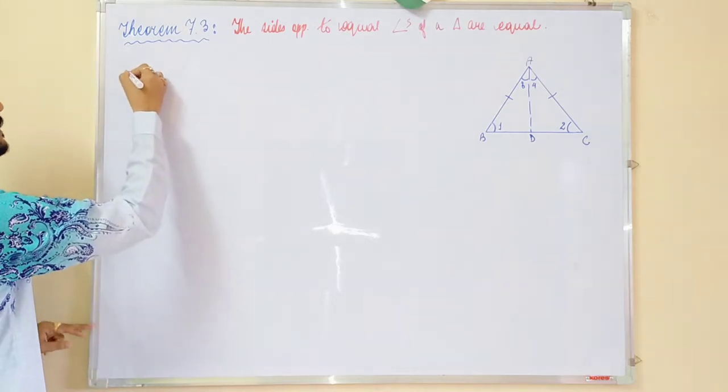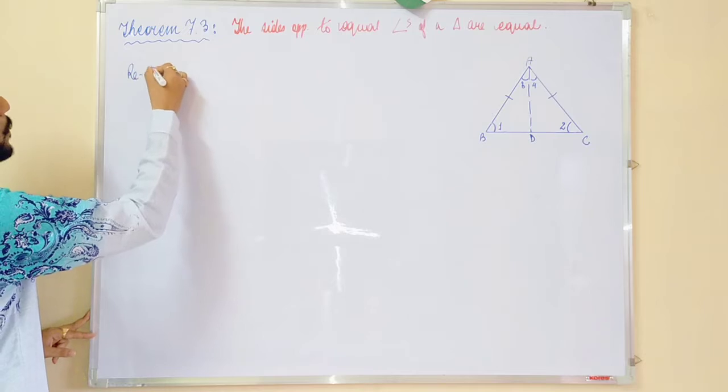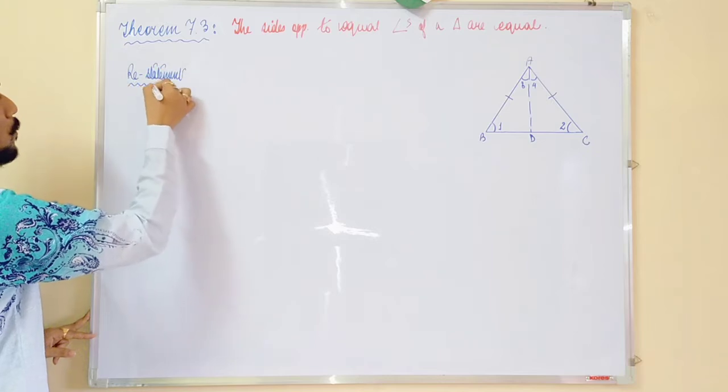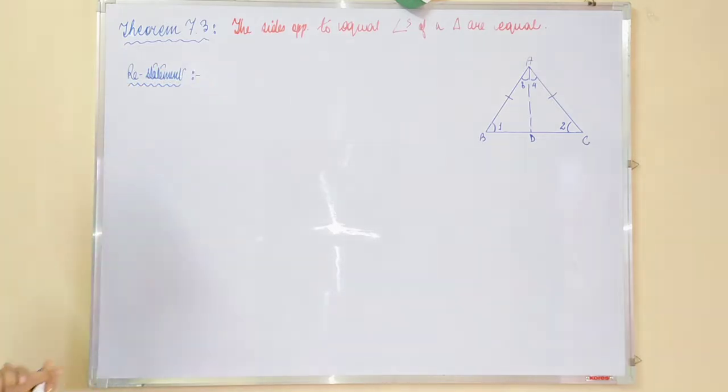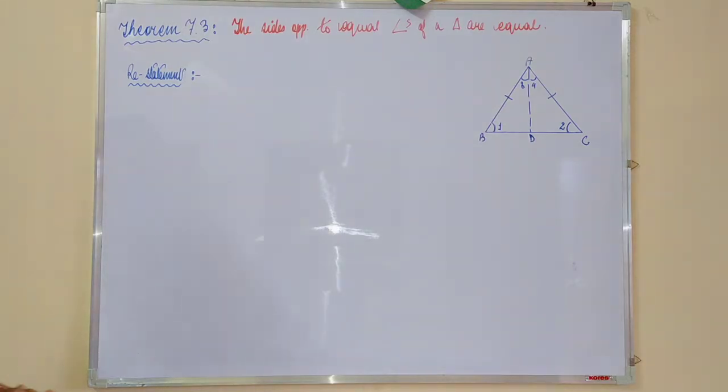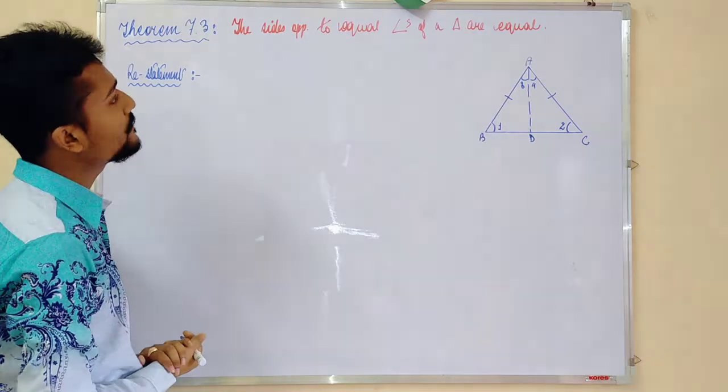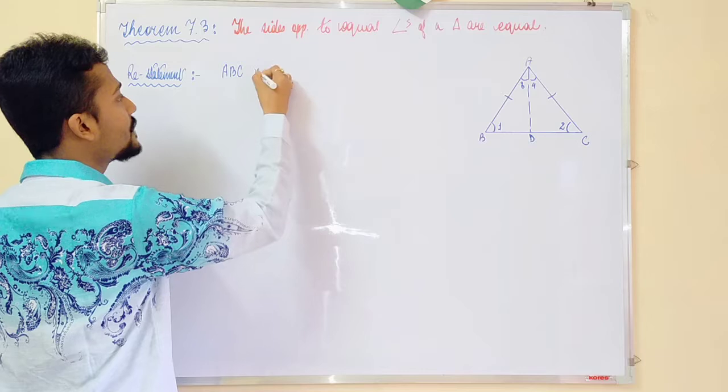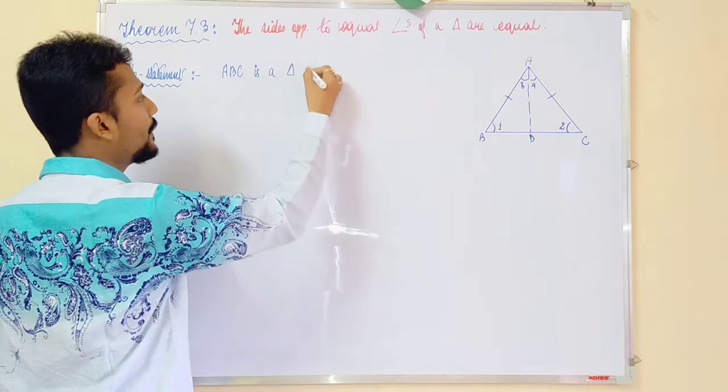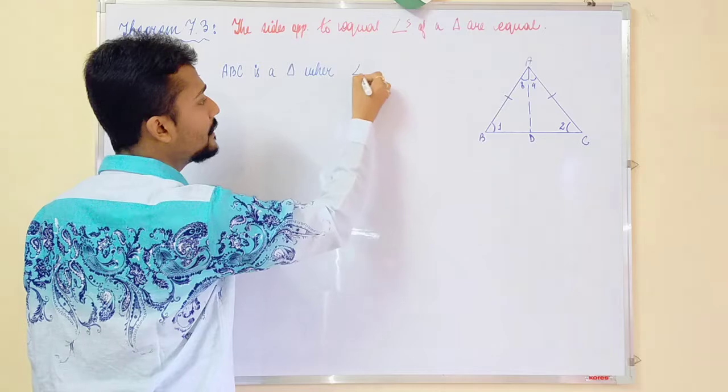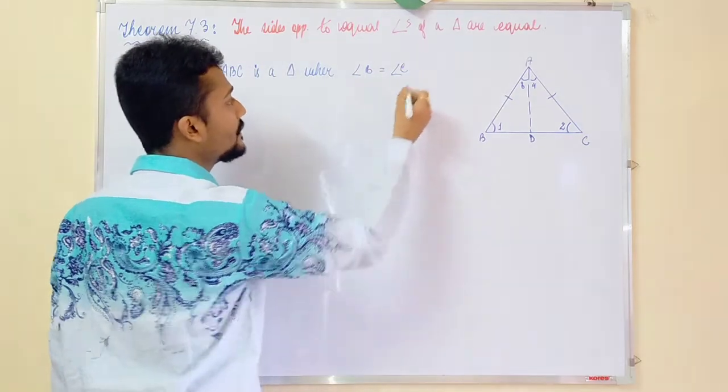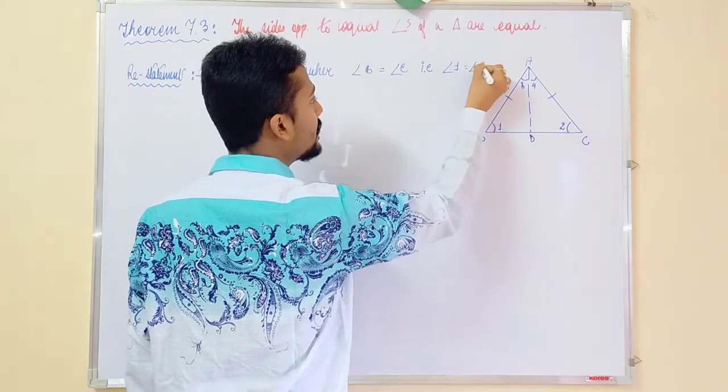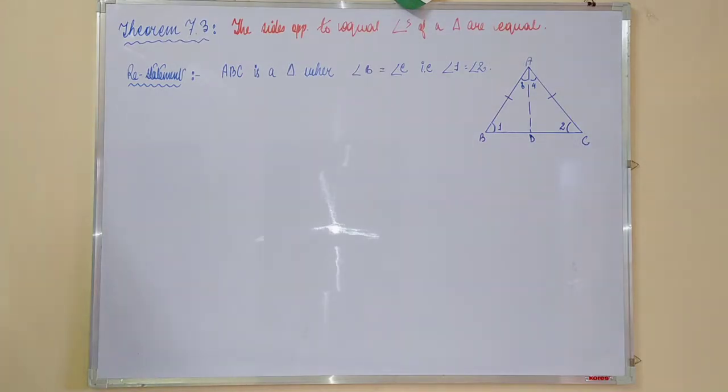So, first will be restatement. So, what we will write? Sides opposite to the equal angles of a triangle are equal. ABC is a triangle where angle B is equal to angle C. That is angle 1 is equal to angle 2. This particular part is given.